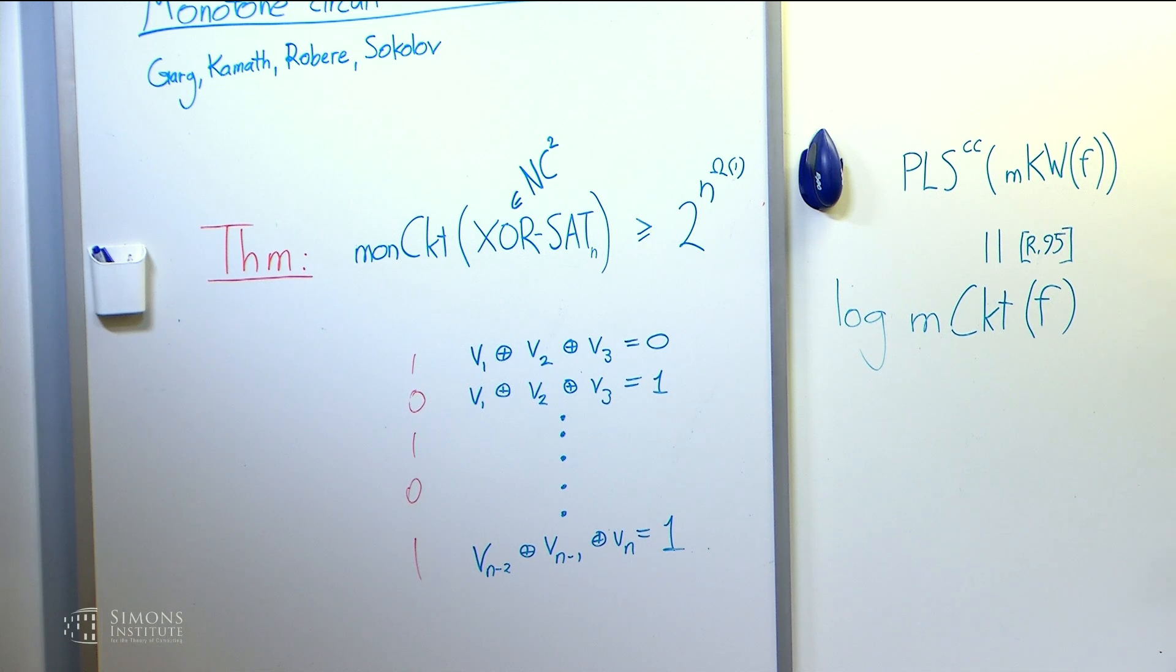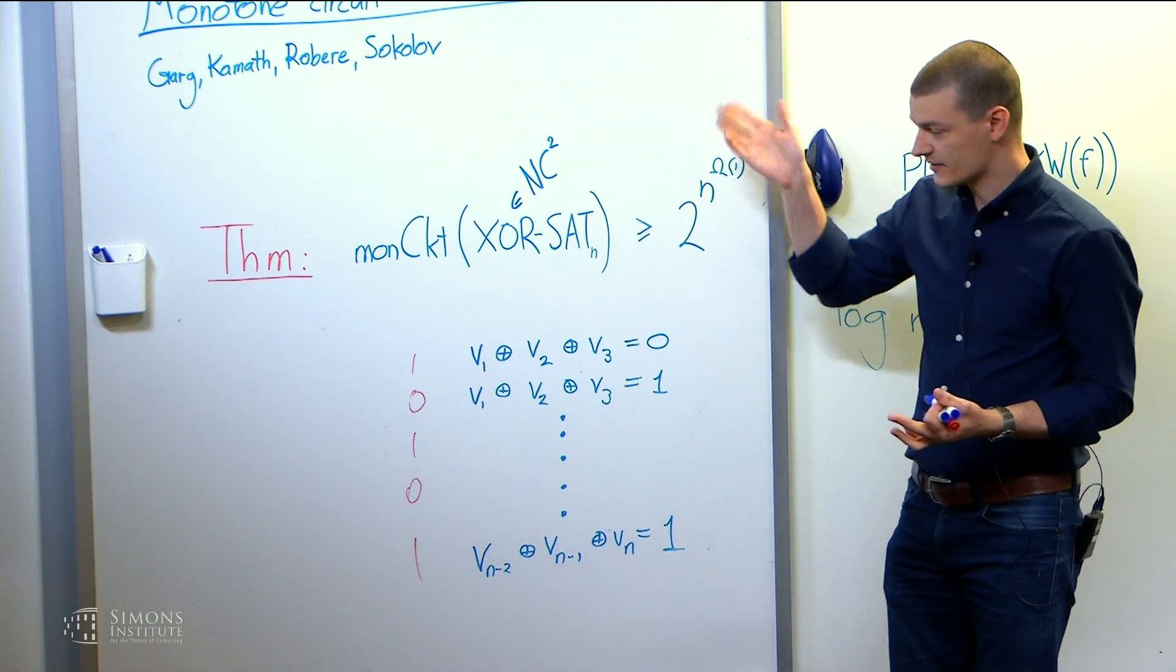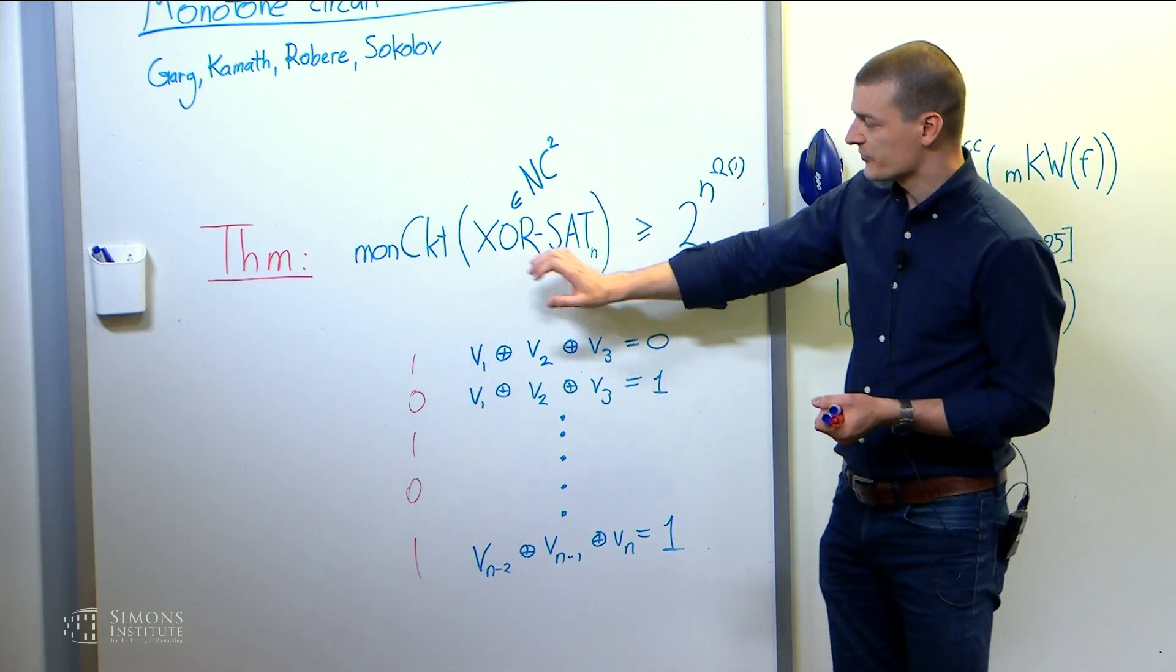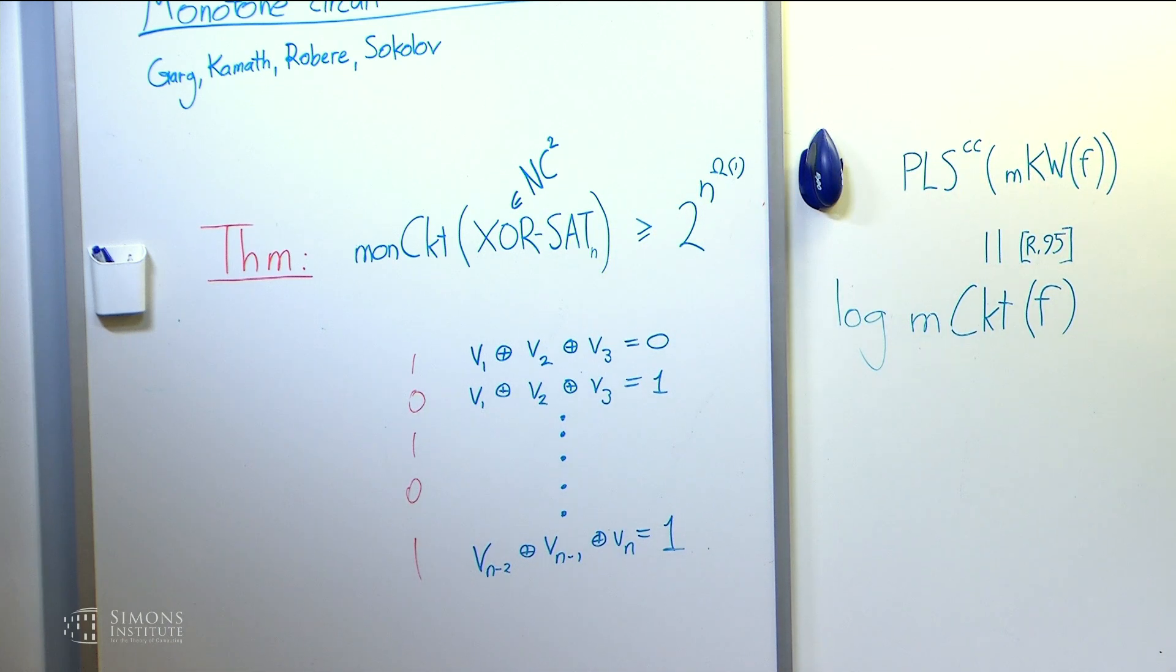But yeah, it's just one thing you can get out of this machine. In fact, we can prove similar lower bounds over any field, not just for GF2 equations, but over any field.